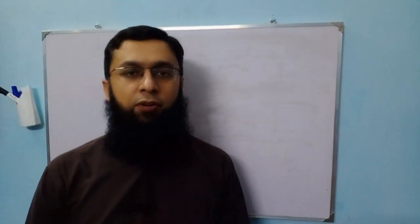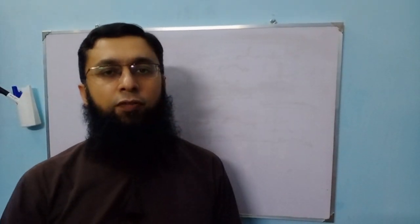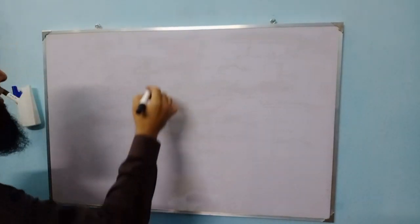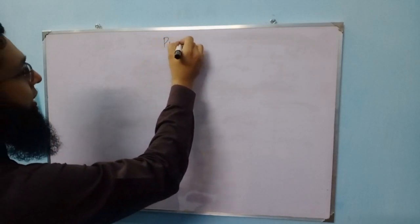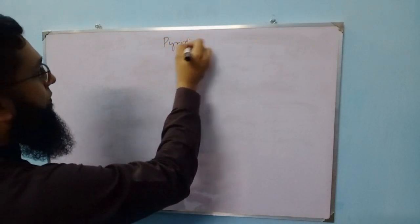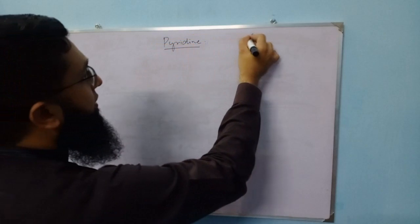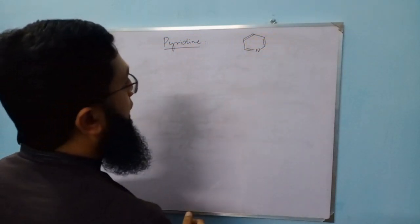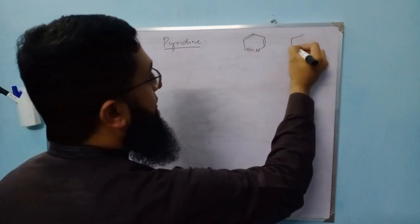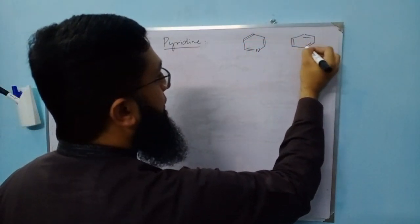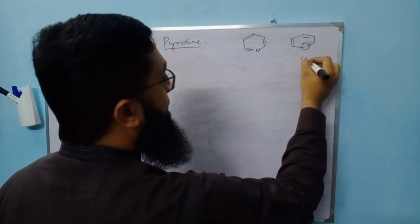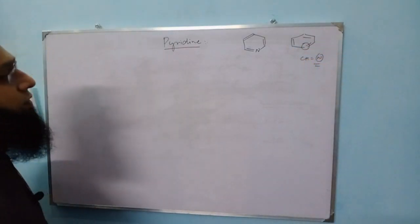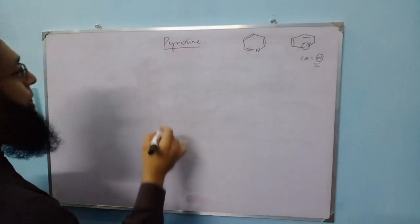Dear students, my name is Dr. Amir Fawaz Zahur, and in this video we will talk about pyridine. Pyridine is a six-membered nitrogen-containing heterocycle. It is the simplest member of azine-type heterocycles, where one CH in benzene is replaced by nitrogen. We will now start with the synthesis of pyridine.